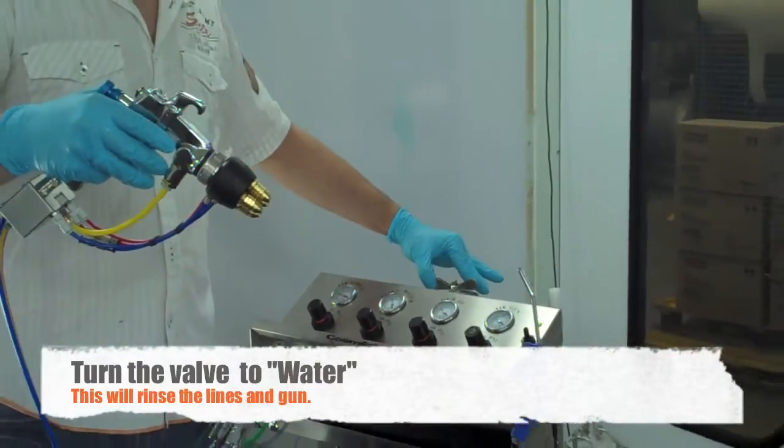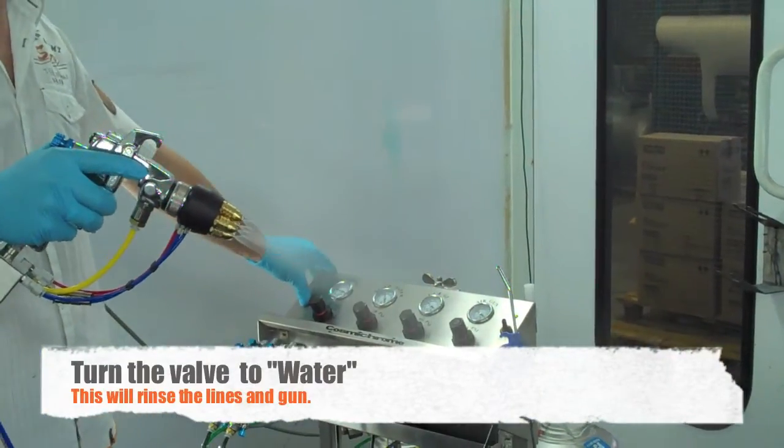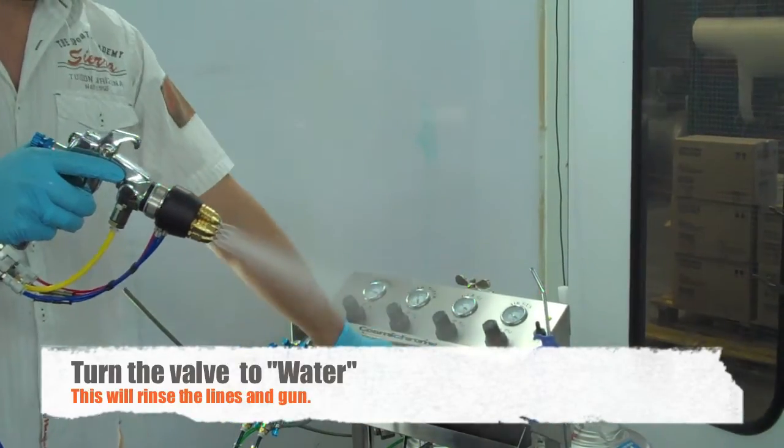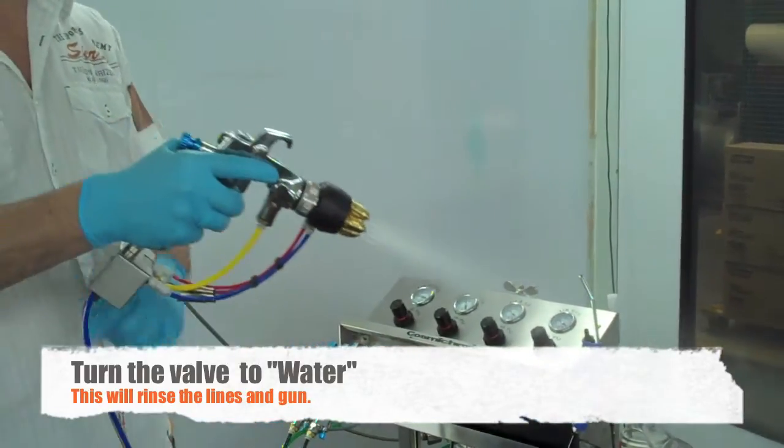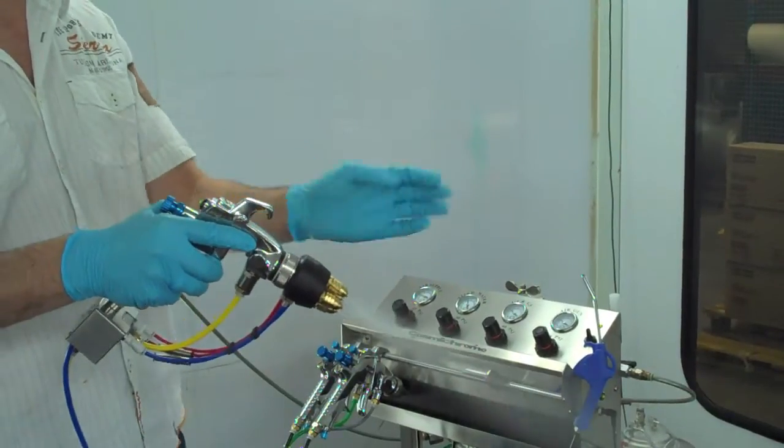Then you click it over to water on, on the trigger. Basically, what it's doing is passing clean distilled water through the tubes, through the solenoid valves, and flushing everything out.